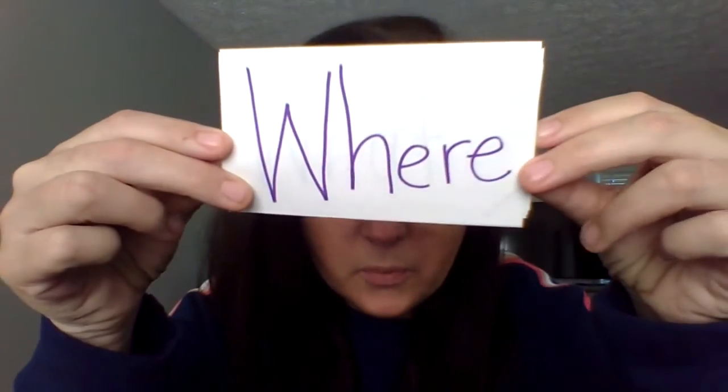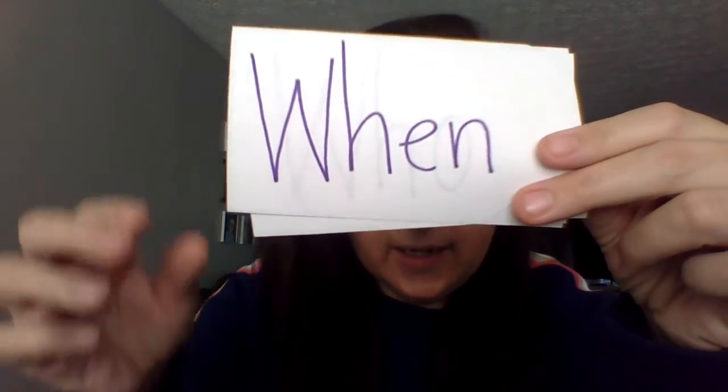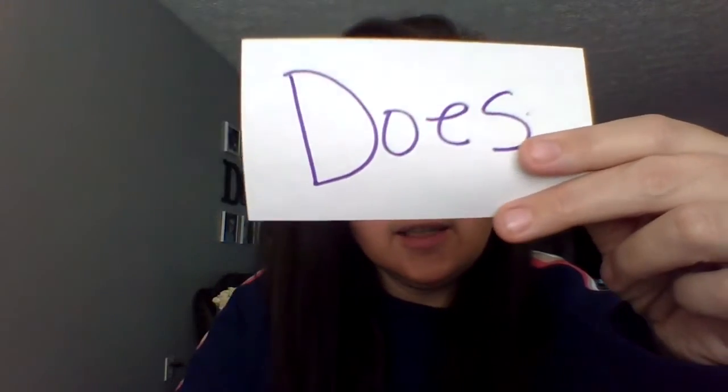Today you get to write three questions in your blue journal. If you need your grown-up to help you spell one of these words — that's where, what, when, who, how, and does — please ask them nicely, and maybe they will help you. But the rest of the words I would like for you to sound out to the best of your ability. Write three questions in your blue journal.